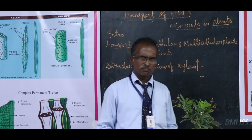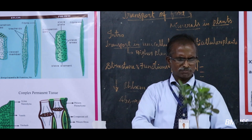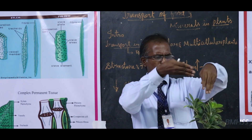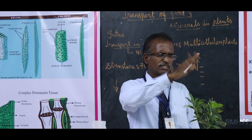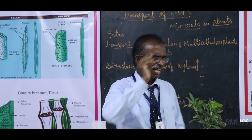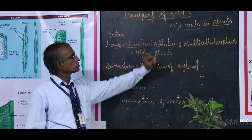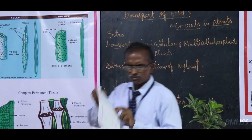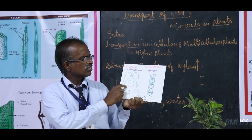Transportation is very important. Without transportation there is no chance to carry any food material. Now this plant - food is prepared in the leaves. That food goes downward, transported to all parts, likewise water is absorbed from the root and goes up to the tip of the plant. In case of transport in unicellular and multicellular plants - what is a unicellular plant? This is nothing but a green algae, a single-celled plant.